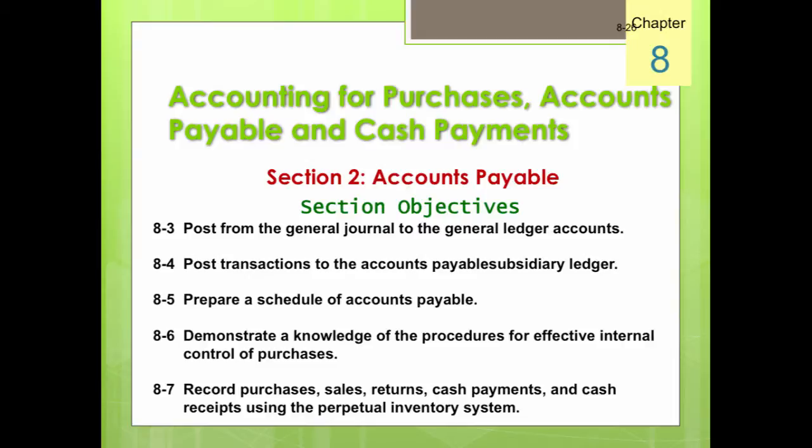In Section 2, we're going to be talking about accounts payable. The objectives are to post the general journal to the general ledger accounts, post transactions to the accounts payable subsidiary ledger, prepare a schedule of accounts payable, demonstrate knowledge of the procedures for effective internal control of purchases, and to record purchases, sales, returns, cash payments, and cash receipts using the perpetual inventory system.